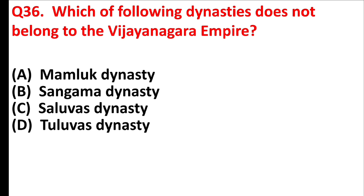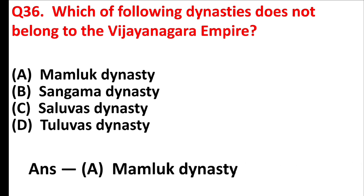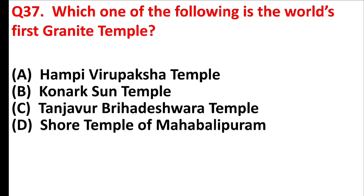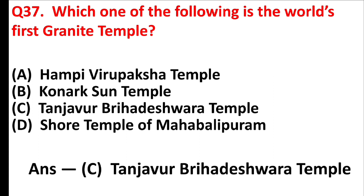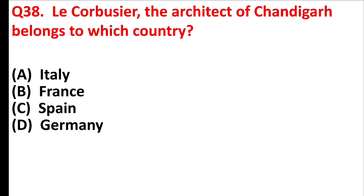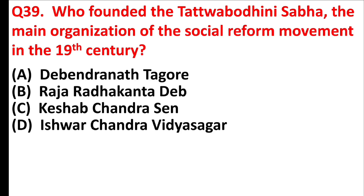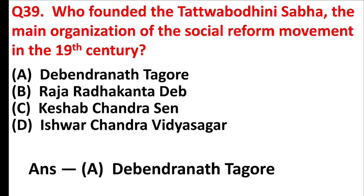Which of the following dynasties does not belong to the Vijayanagar Empire? Answer is Option A: Mamluk dynasty. Which one of the following is the world's first granite temple? Answer is Option C: Tanjavur Brihadeshwara temple. The architect of Chandigarh, Le Corbusier, belongs to which country? Answer is Option B: France. Who founded the Tattwa Bodhini Sabha, the main organization of the social reform movement in the 19th century? Answer is Option A: Devendranath Tagore.